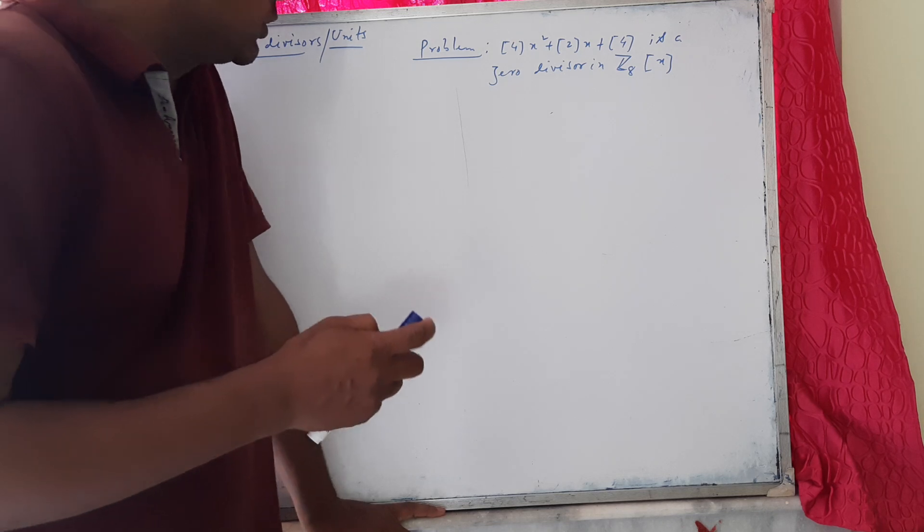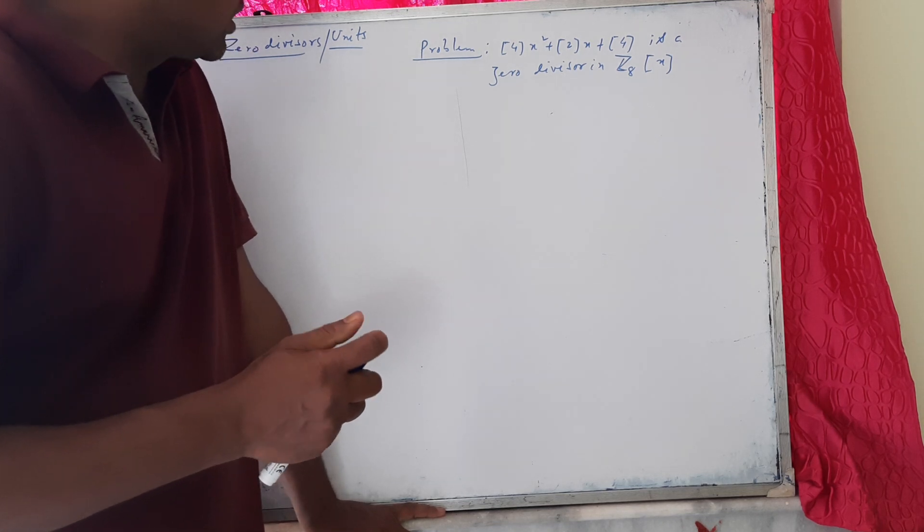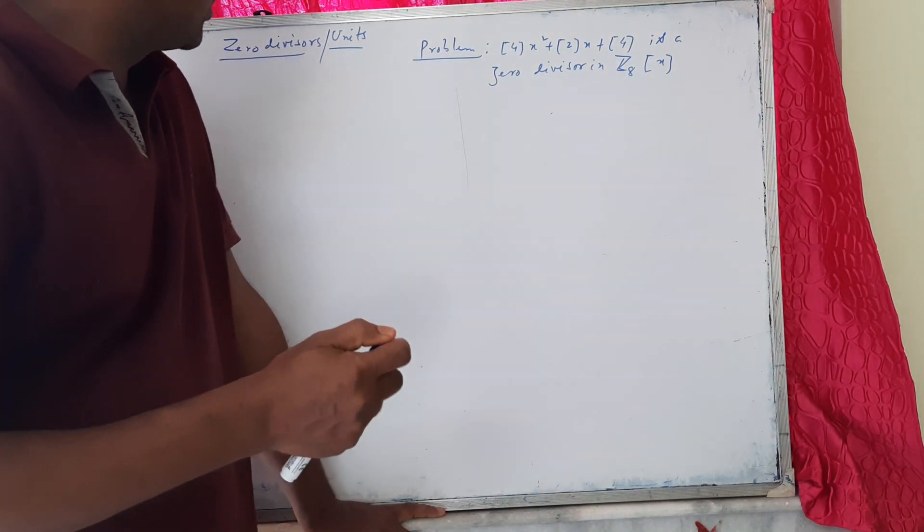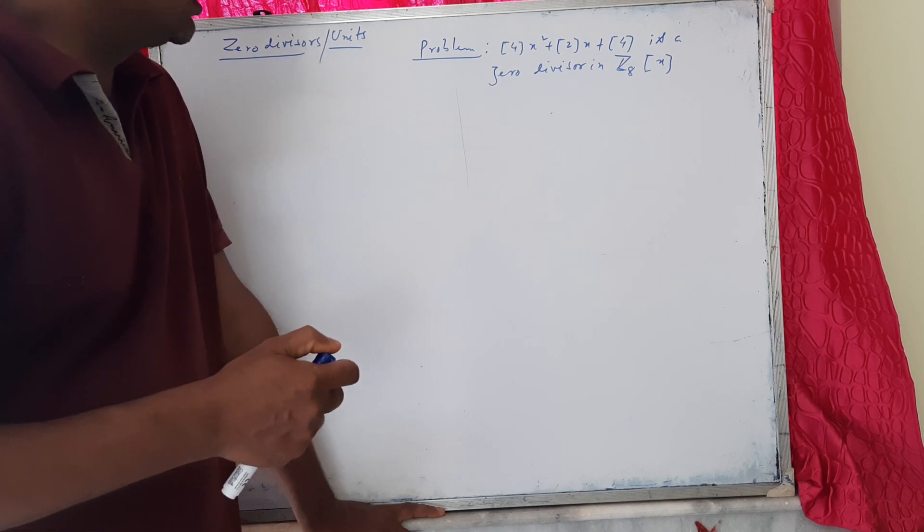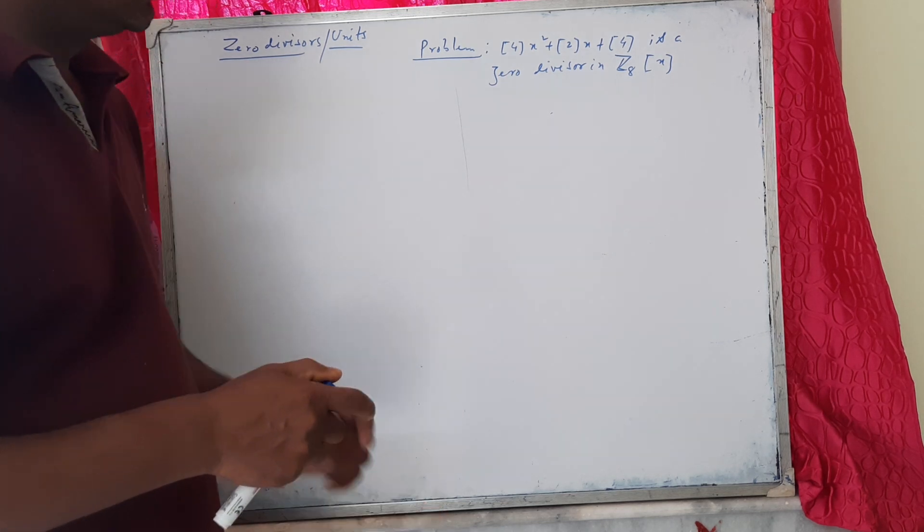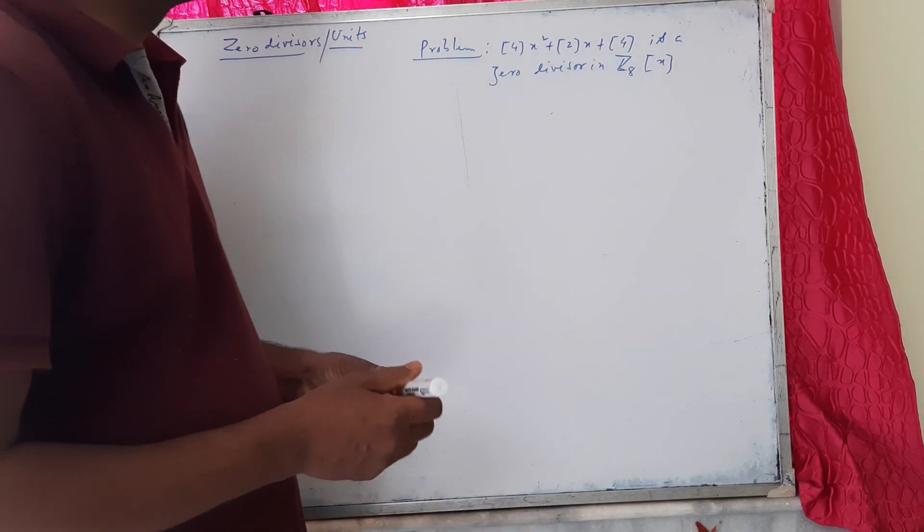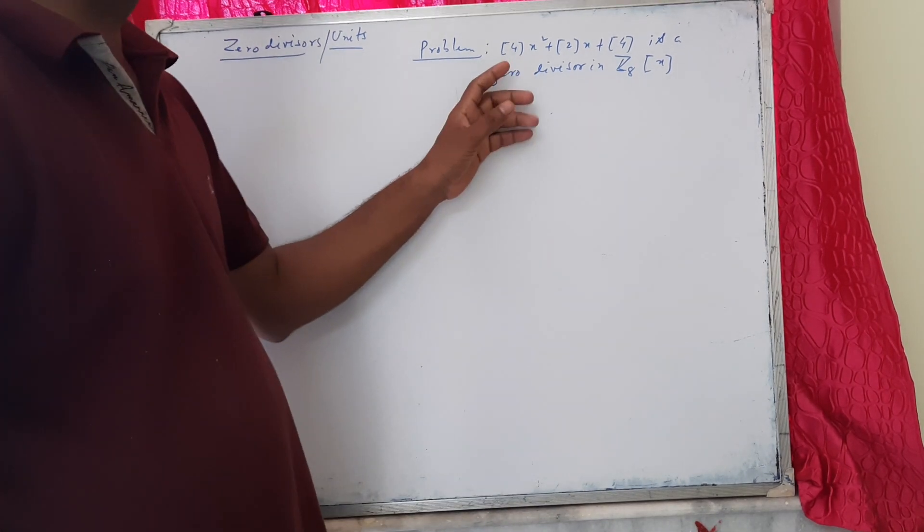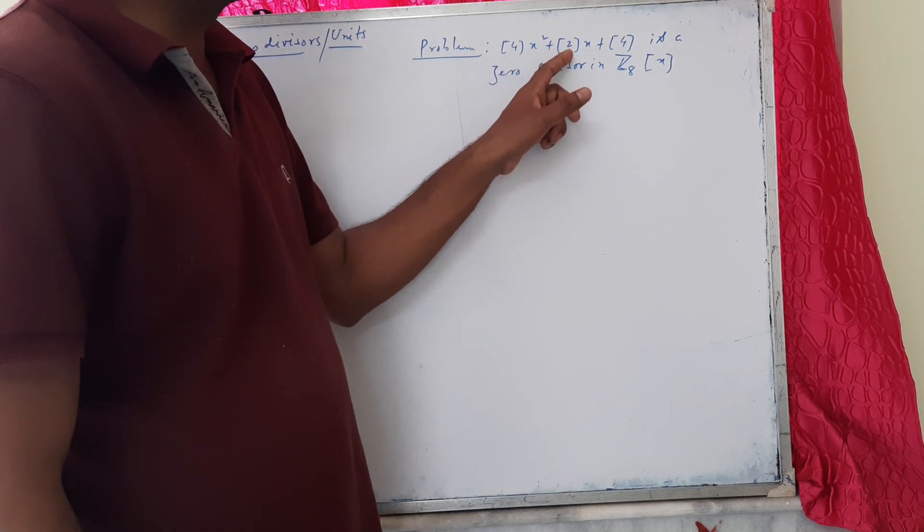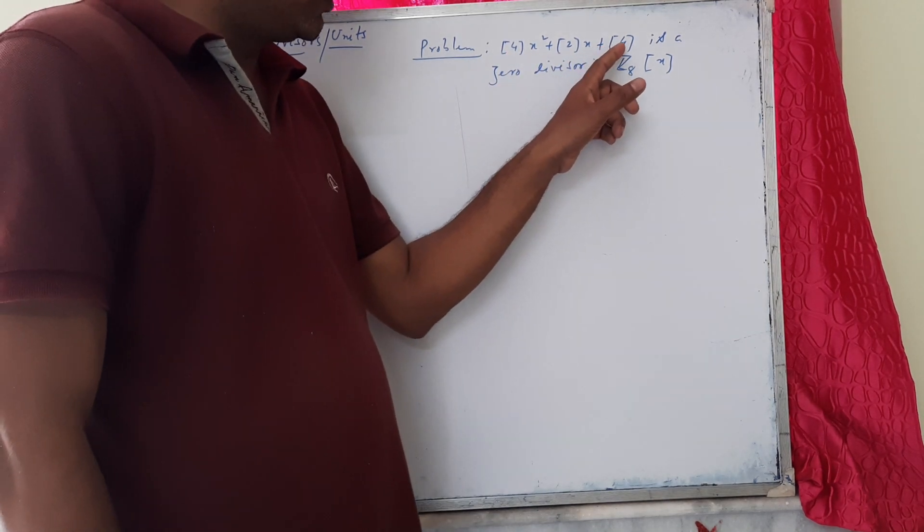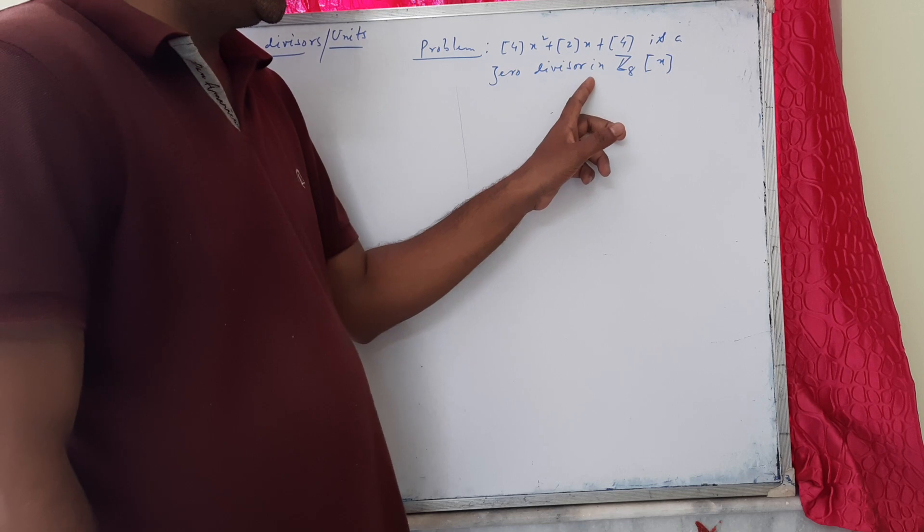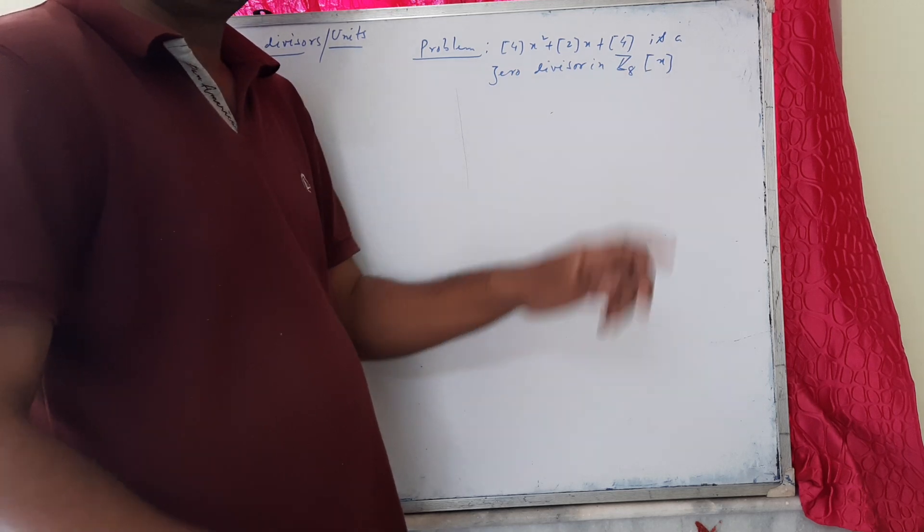Hello friends, in this class we will learn about zero divisors and units in the ring of polynomials. We start with the problem: whether the polynomial class 4x² + class 2x + class 4 is a zero divisor in Z₈[x] or not.